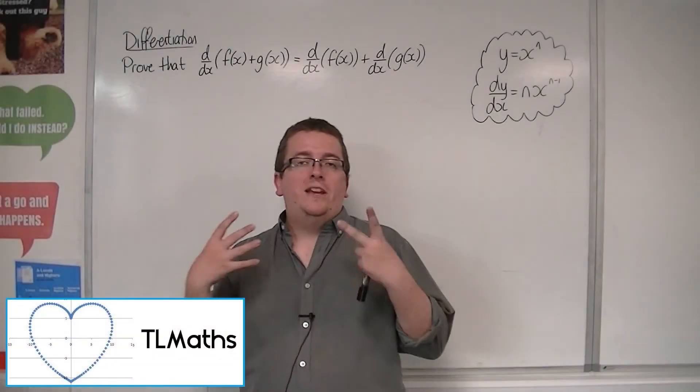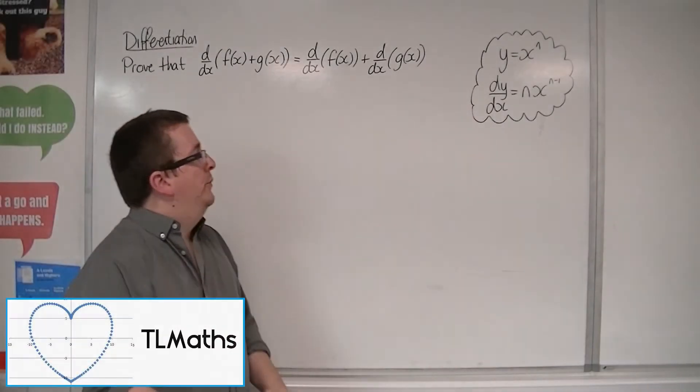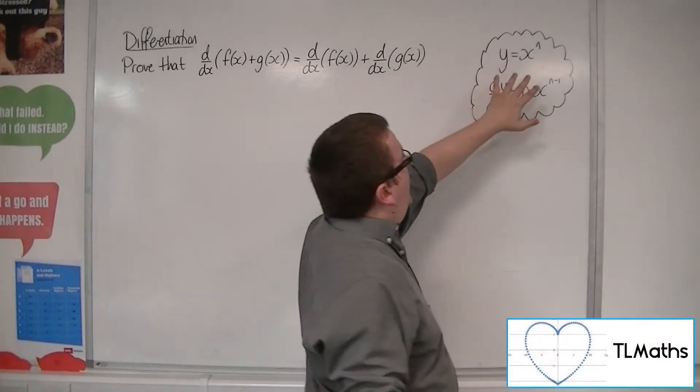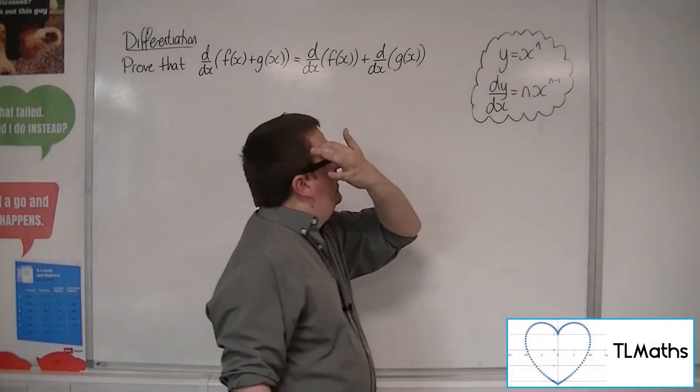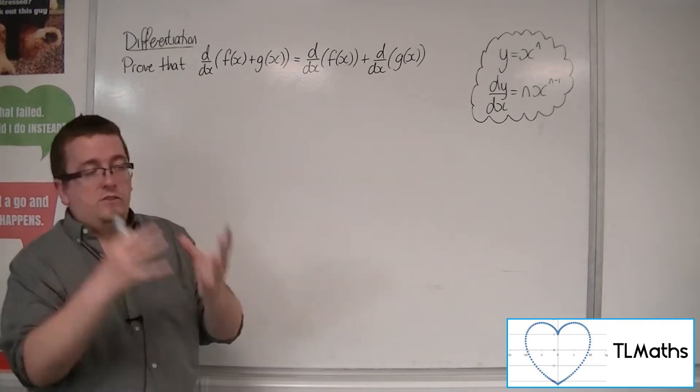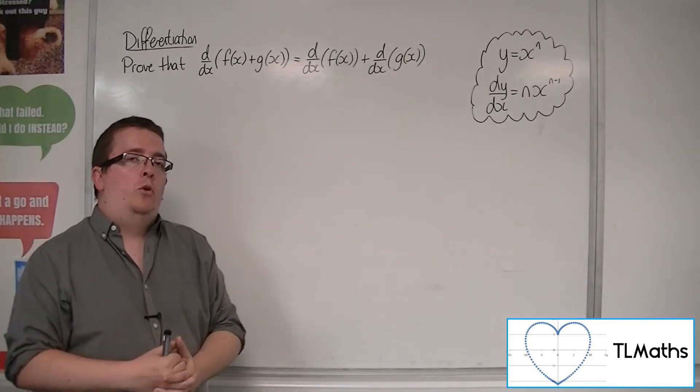So from the previous video, we've got an incredibly important result, that if y is equal to x to the n, then dy by dx is equal to n x to the n minus 1. That's a really, really important result.